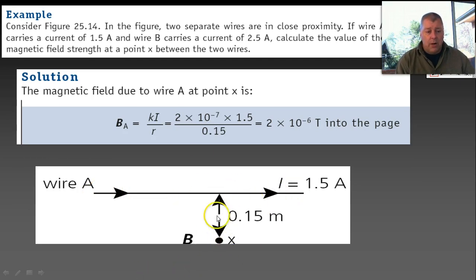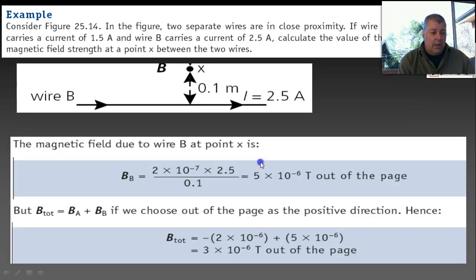So, the first thing is you just imagine that there's wire A, ignore wire B, and you work out the magnetic field due to wire A. Using our formula, putting the numbers in, and we get 2 times 10 to the minus 6 Teslas into the page. How do we know it's into the page? Because we've done our right-hand grip rule, and we've worked out that it's into the page. We then work out the magnetic field strength due to wire B, and in this case, it's going to be out of the page. Get a different value out of the page. Again, right-hand grip rule. We've got our fingers pointing towards us, and therefore, we have out of the page. And then we choose that out of the page is positive. So, we do a vector addition, and we end up with the total magnetic field being 3 times by 10 to the minus 6 Teslas out of the page.